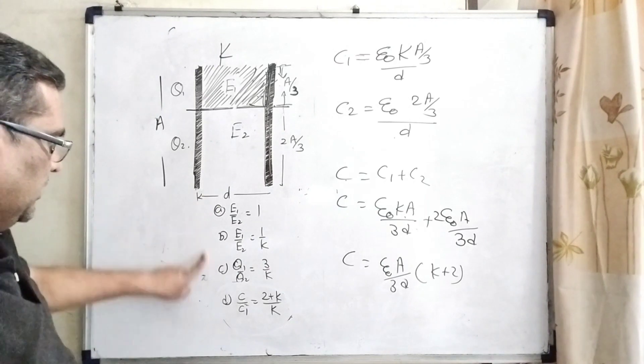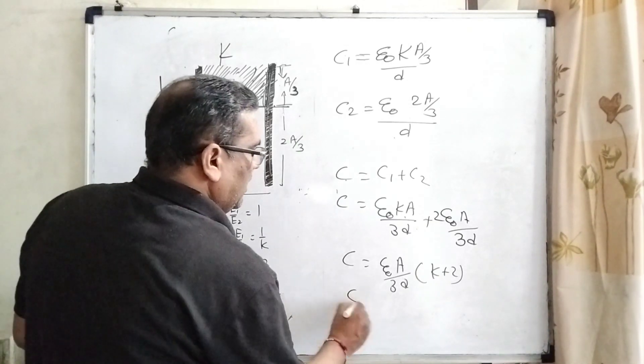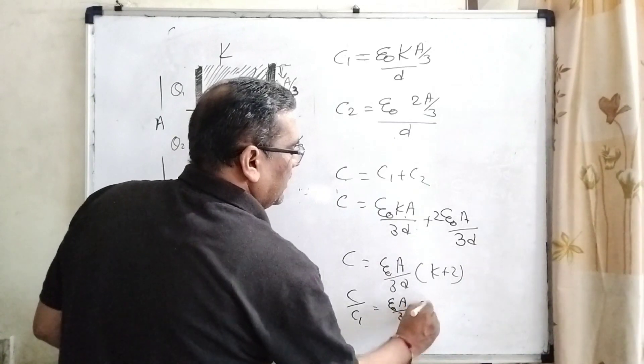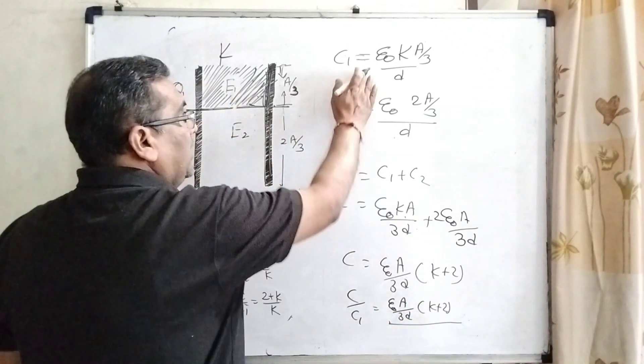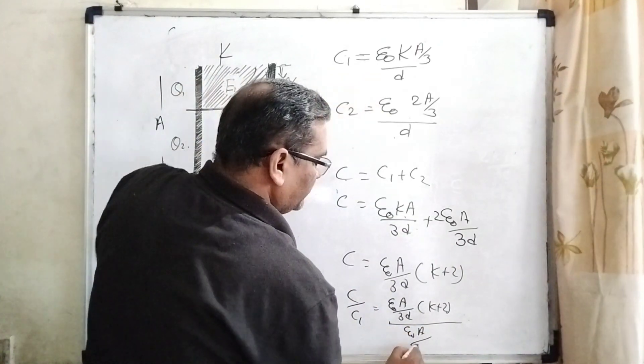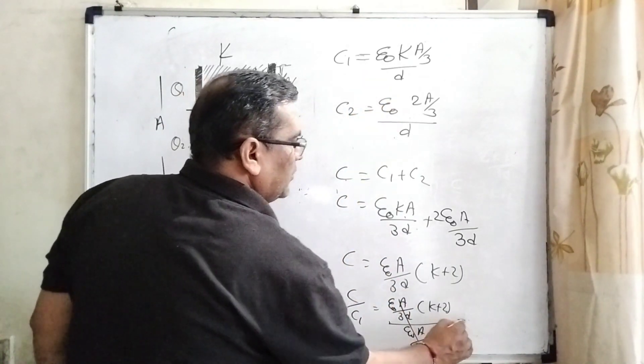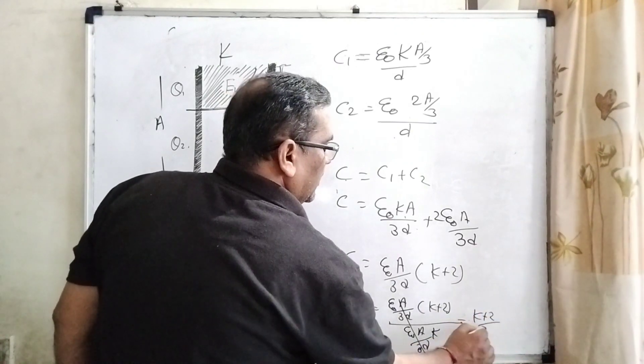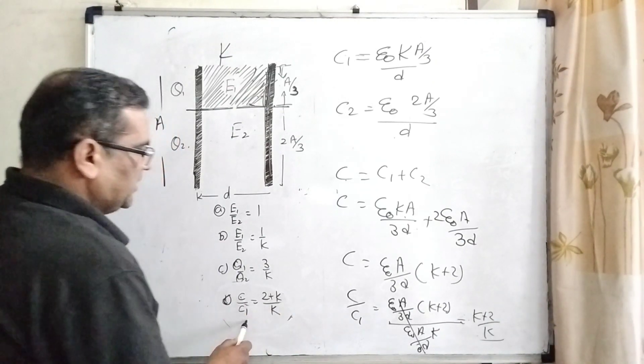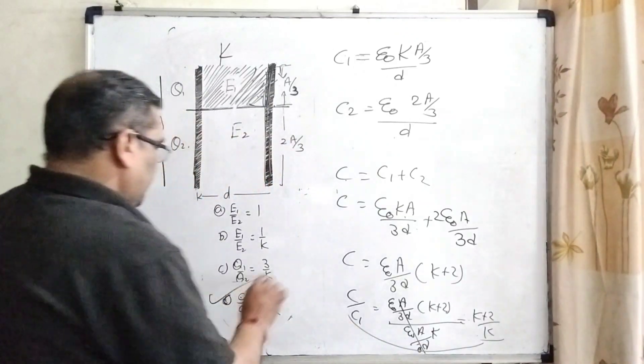Here in this option you can see that C upon C1 we have to find out. It means C upon C1 equals epsilon naught A by 3d times K plus 2, divided by epsilon naught A by 3d times K. Then this portion will cancel out, giving K plus 2 by K. Now let us see, yes, D option is correct because C upon C1 is equal to 2 plus K by K. So here D option is correct.